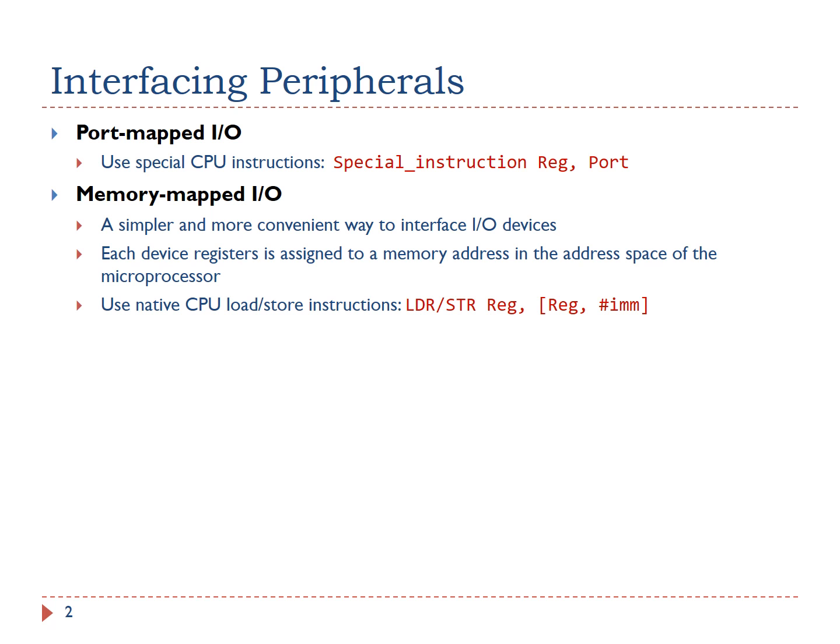On the other hand, Memory Mapped I/O does not need any special instructions. Each register is assigned to a memory address in the memory address space of the microprocessor. Memory Mapped I/O is performed by the native load and store instructions of the processor. Therefore, Memory Mapped I/O is a more convenient way to interface I/O devices.